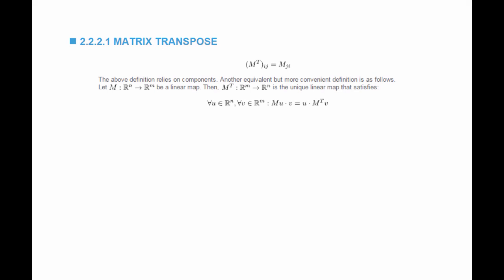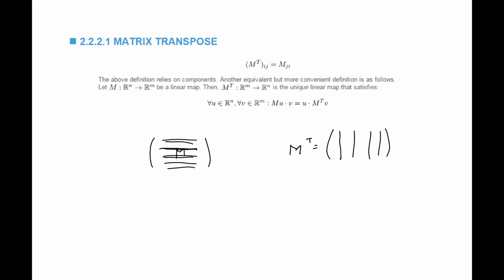The transpose of a matrix can have two different definitions, and their two definitions are equivalent. The first definition is: if I have a matrix M with rows, M transpose is basically every row — I'm going to take it and make it a column, and so on. So this is the new matrix M transpose.